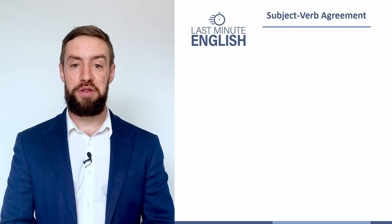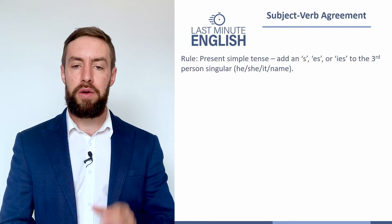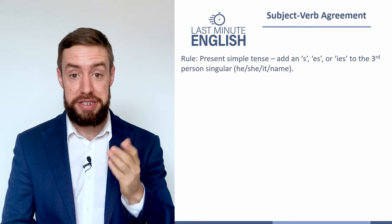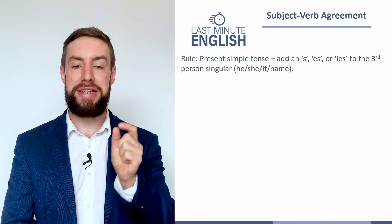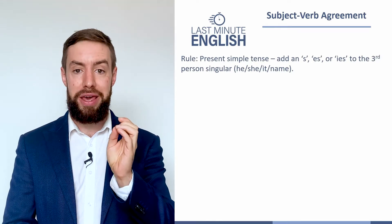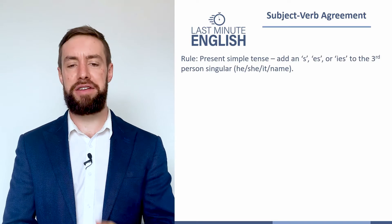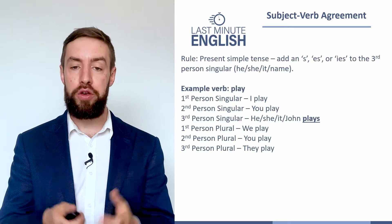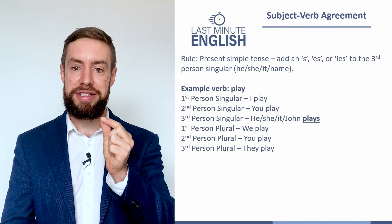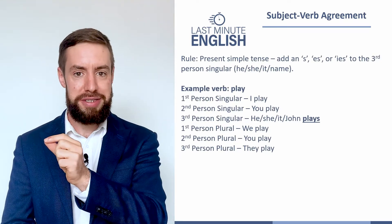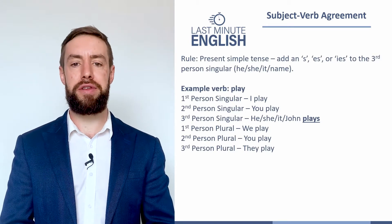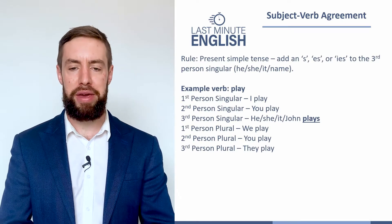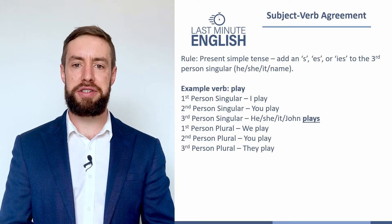Let's quickly review the rule. When we have a verb in the third person singular in the present simple tense, we have to add an S, an ES, or an IES to the end of that verb. So: I play, you play, he/she/it — or someone's name like John — plays, and then all the rest are 'play' with no S. Add the S when it's the third person singular.